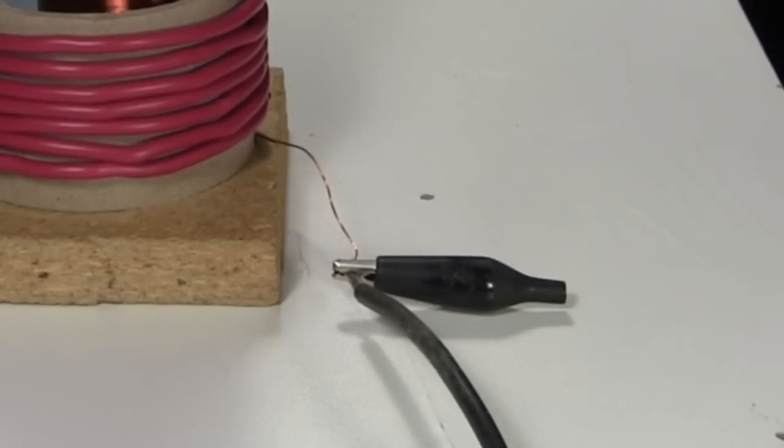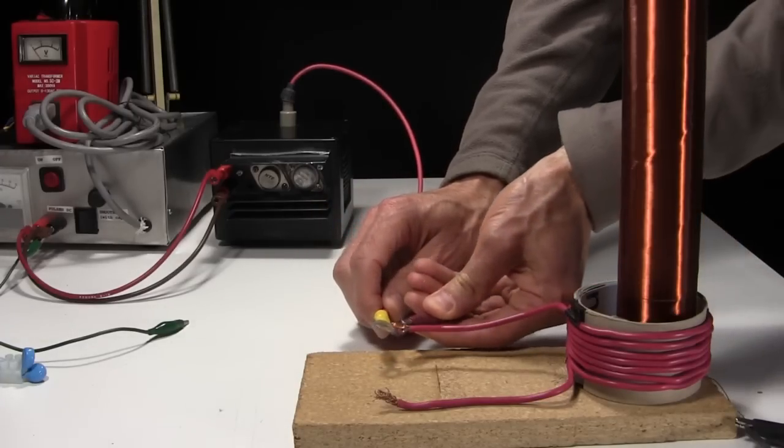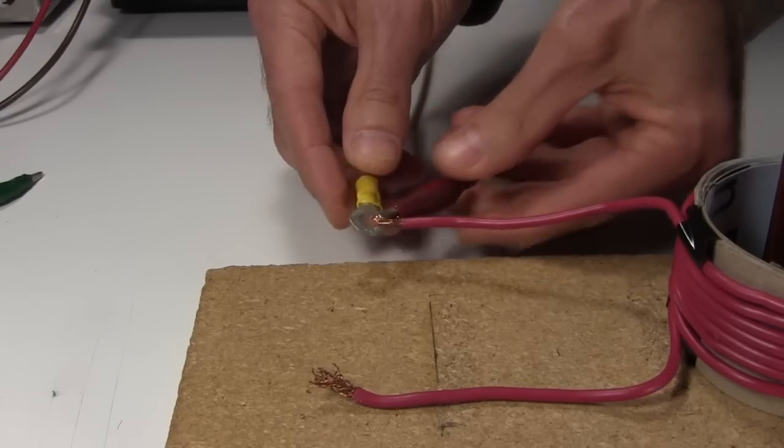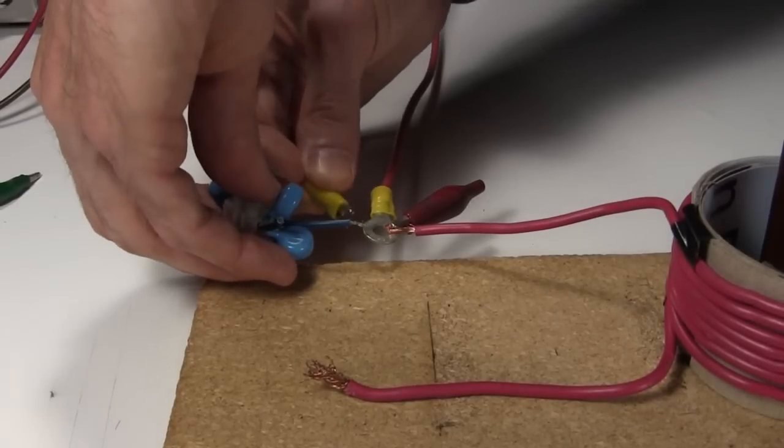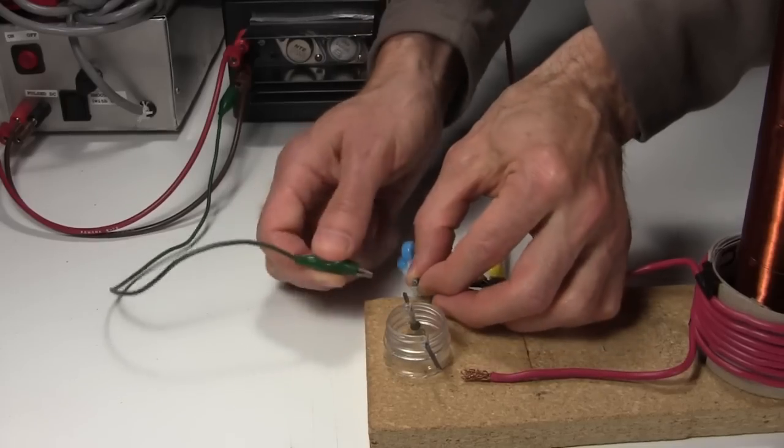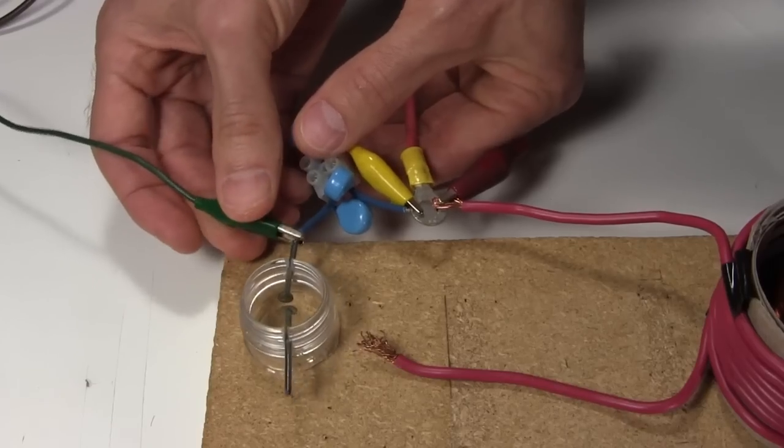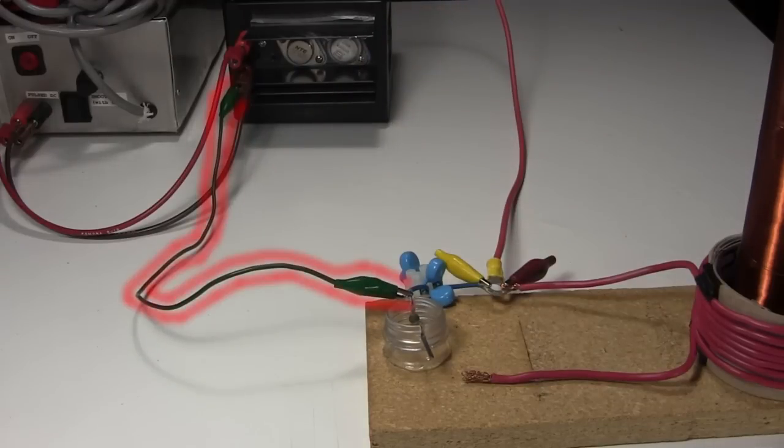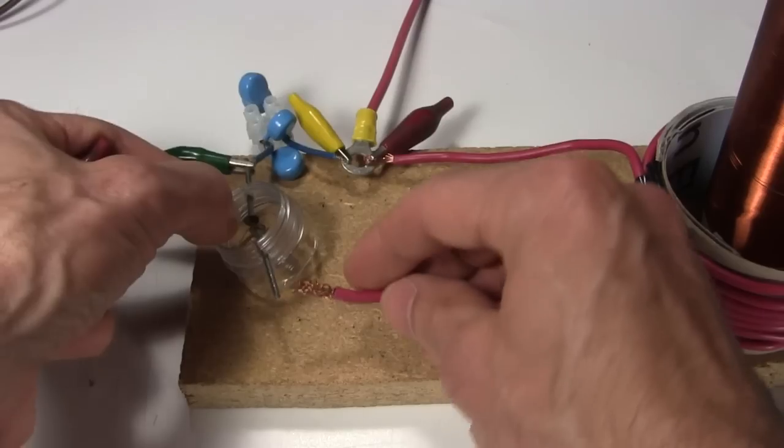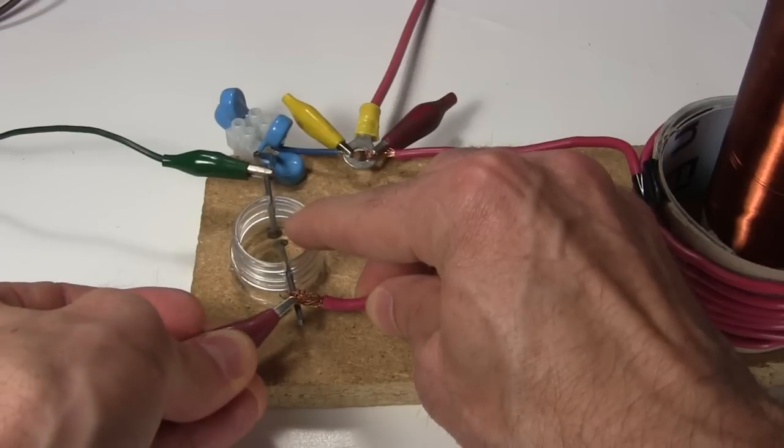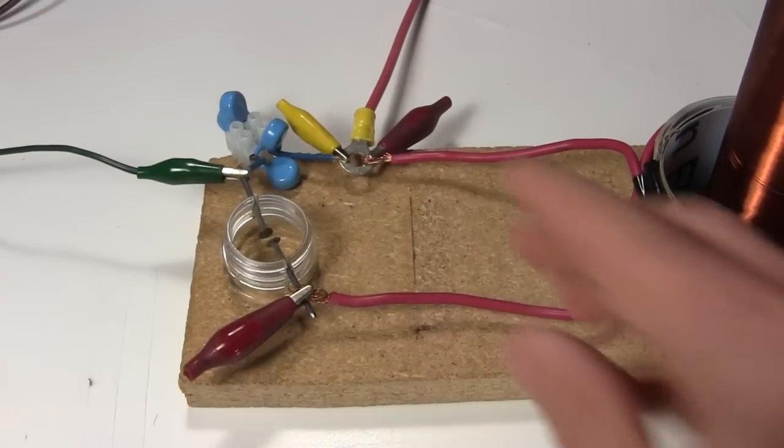Then I connect one end of the primary coil to the wire coming from the high voltage power supply. That's also connected to one side of the capacitors. The other side of the capacitors goes to one side of the spark gap. But notice that connection is made using an alligator clip that's part of a wire going to the power supply's negative. And lastly, the other end of the spark gap goes to the other end of the primary coil. Done.